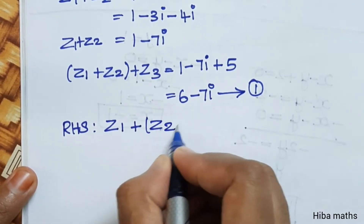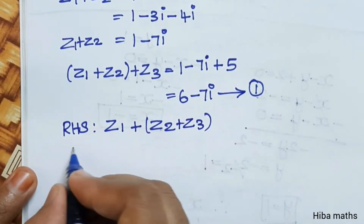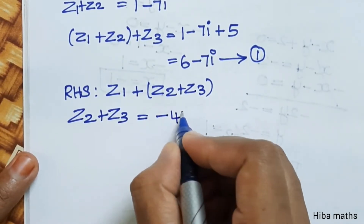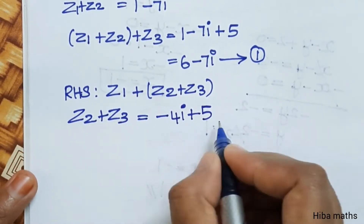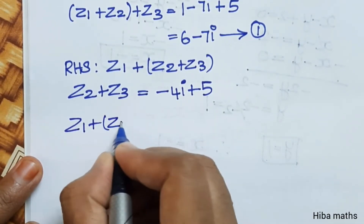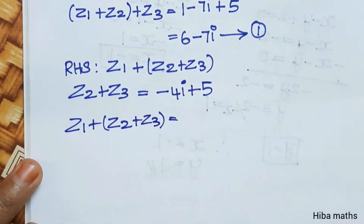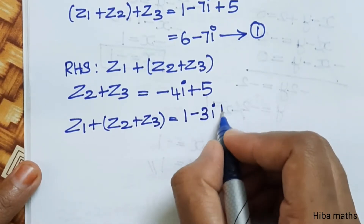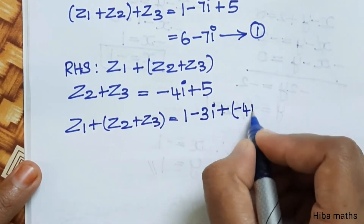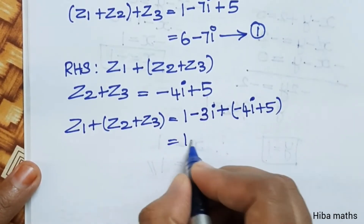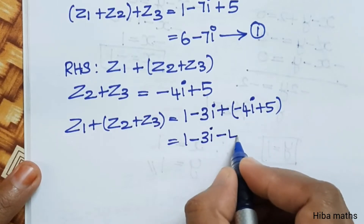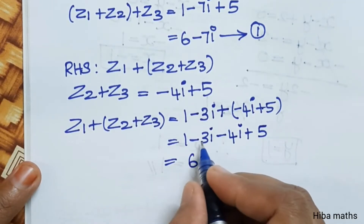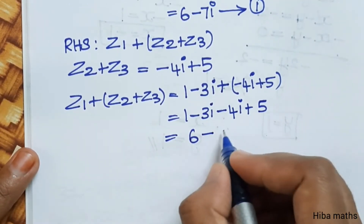RHS: z1 plus z2 plus z3. First bracket is z2 plus z3. z2 value minus 4i plus z3 value 5. Then z1 value 1 minus 3i plus bracket minus 4i plus 5. Adding the line: 1 minus 3i plus minus 4i plus 5. So 1 plus 5 is 6, and 3 plus 4 is 7, giving 6 minus 7i.